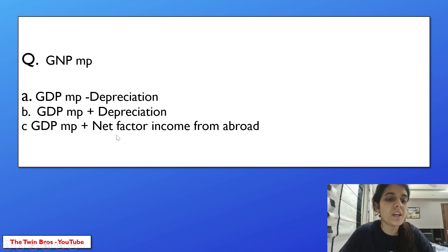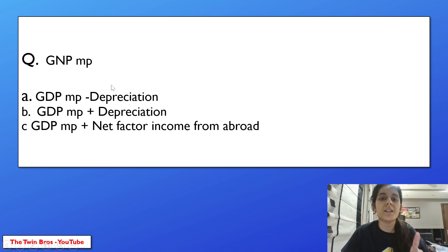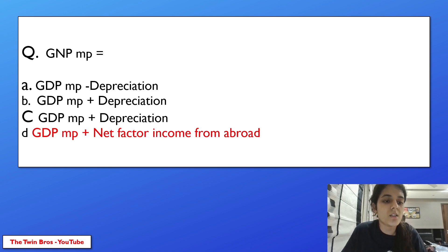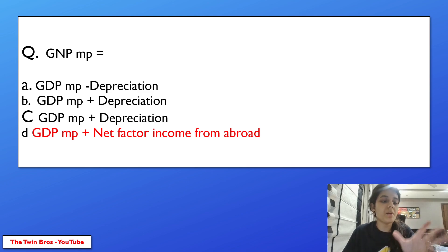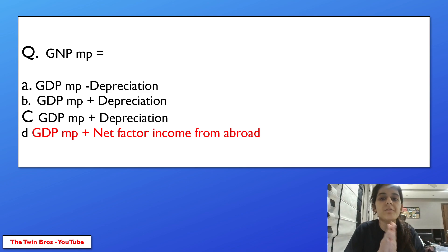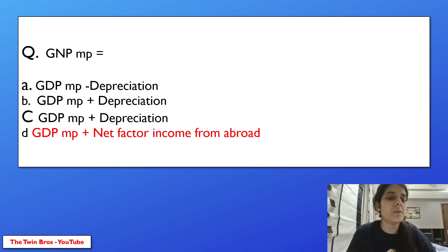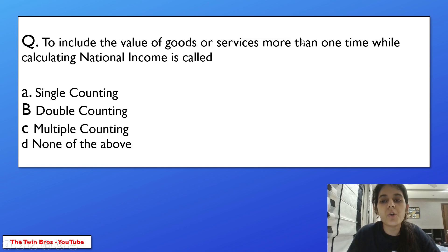Next question: GNP at MP, which is gross national product at market price — how do we calculate that? The answer is GDP at MP plus net factor income from abroad. GDP at MP means gross domestic product at market price. When we add net factor income from abroad, we get GNP at MP. That is option D.